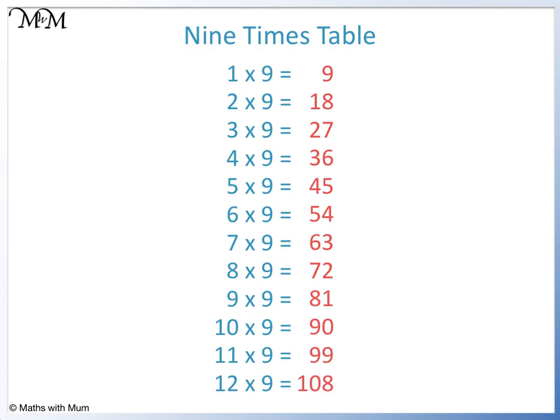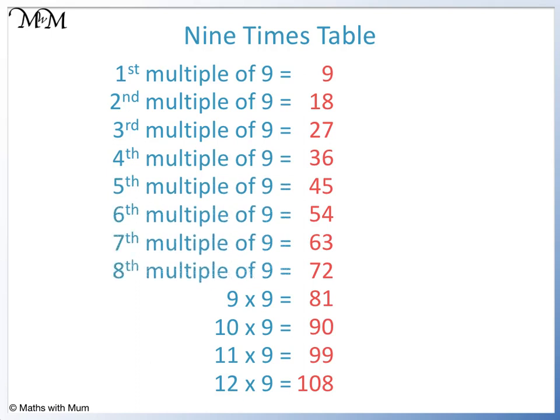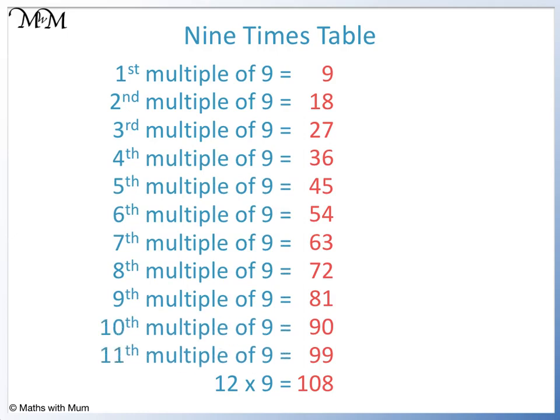1 times 9 equals 9, so 9 is the first multiple of 9. We then have 18, 27, 36, 45, 54, 63, 72, 81, 90, 99 and 108.